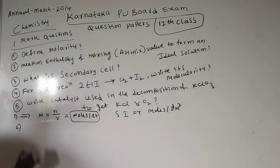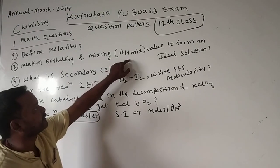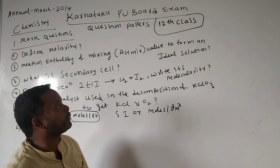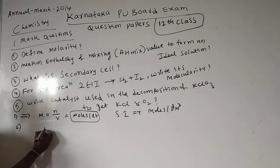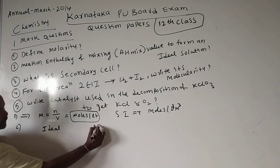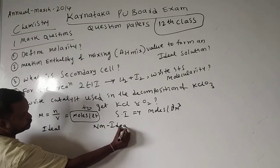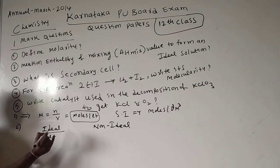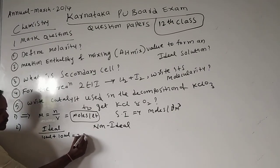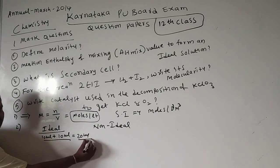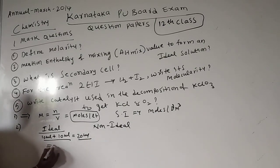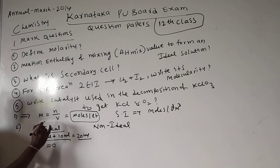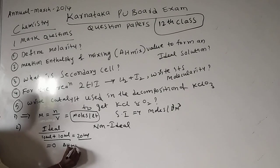The second question: mention the enthalpy of mixing, delta H-mix, for an ideal solution. Solutions are two types: ideal solution and non-ideal solution. For an ideal solution — if you take 10 ml of one component and add 10 ml of another component, you get exactly 20 ml. So 20 minus 20 equals zero. That means for an ideal solution, delta H-mix is equal to zero.